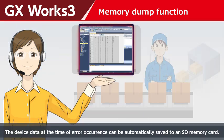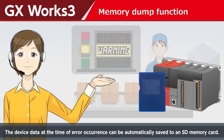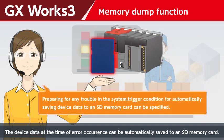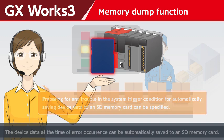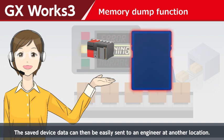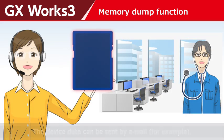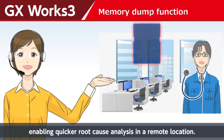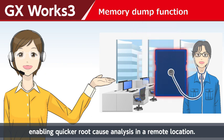The device data at the time of error occurrence can be automatically saved to an SD Memory Card. Preparing for any trouble in the system, a trigger condition for automatically saving device data to an SD Memory Card can be specified. The saved device data can then be easily sent to an engineer at another location — for example, by email — enabling quicker root cause analysis in a remote location.